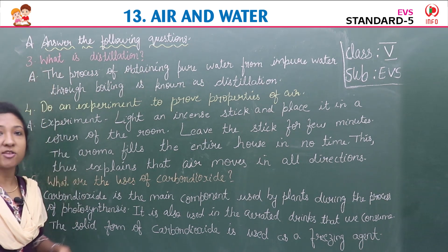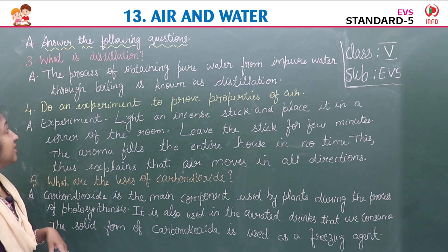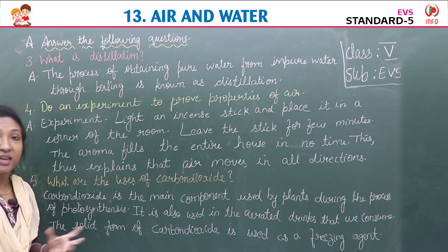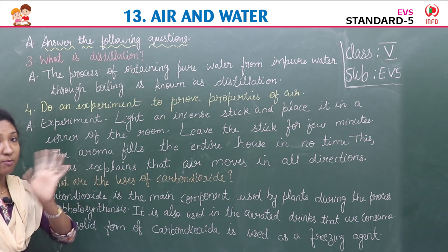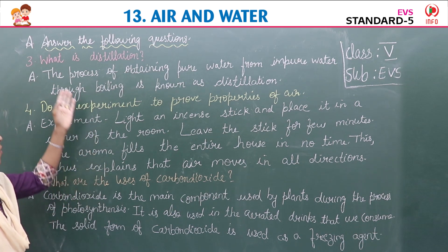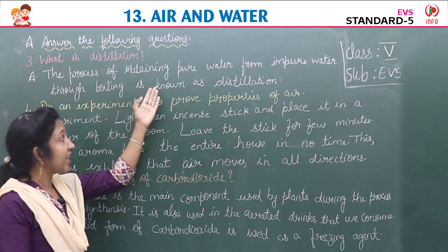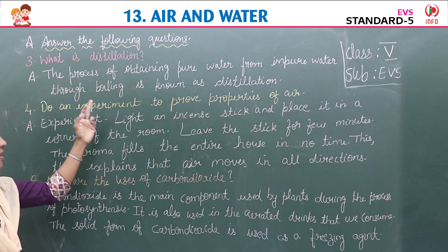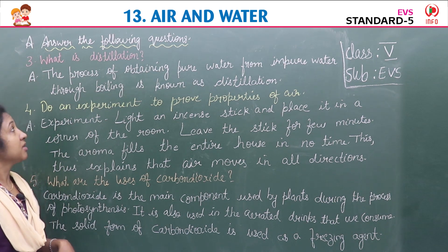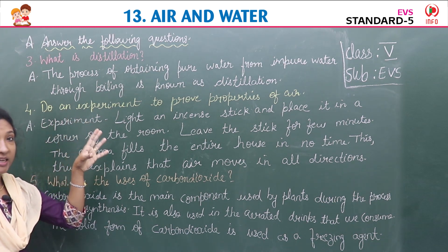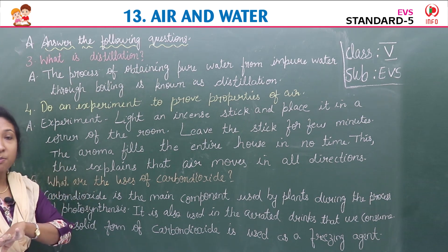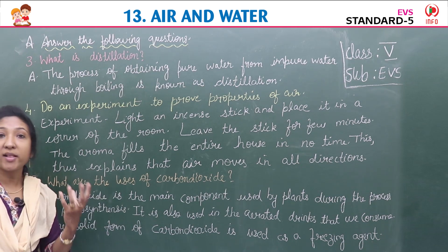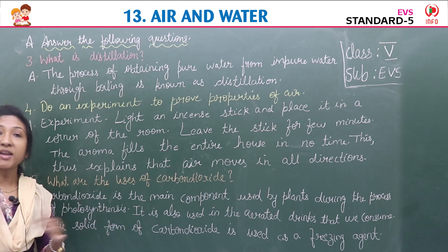The third question: what is distillation? Distillation is the process of obtaining pure water from impure water through boiling. We boil the water, then separate the pure and impure water. The process of obtaining pure water from impure water through boiling is known as distillation.